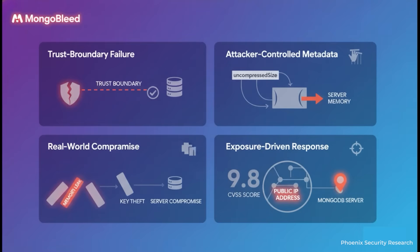Let's wrap up with the key takeaways. First, MongoBleed is a classic trust-boundary failure — the server blindly trusted metadata from the client. Second, this allowed an attacker-controlled value, the uncompressed size, to directly manipulate server memory. Third, and this is the big one, memory disclosure is not theoretical — it is a direct path to real-world compromise. And finally, your response can't just be about a CVSS score. It has to be driven by context. The real question isn't just 'are we vulnerable?' but 'are we exposed?' and 'who is fixing it?'